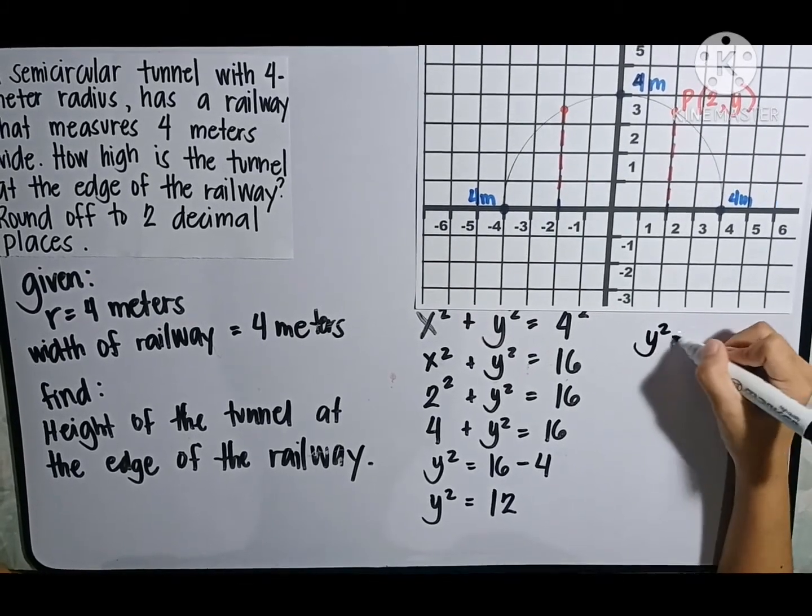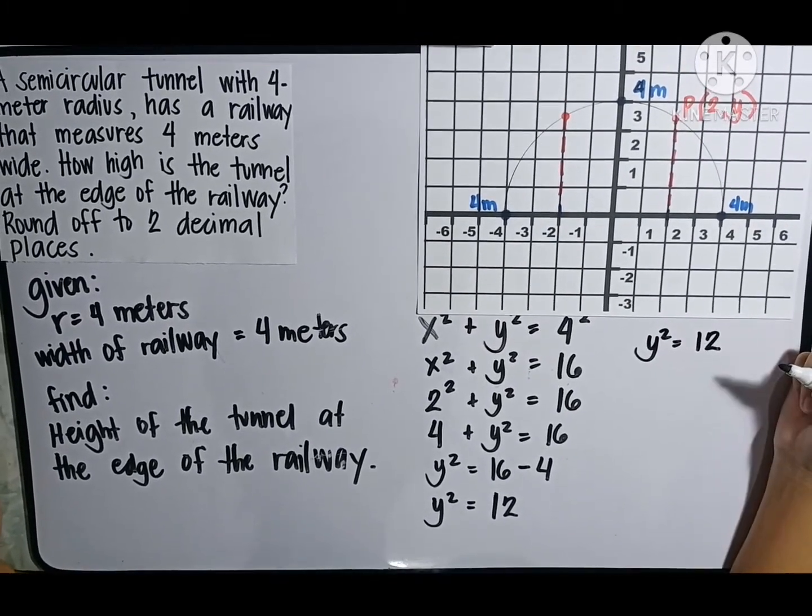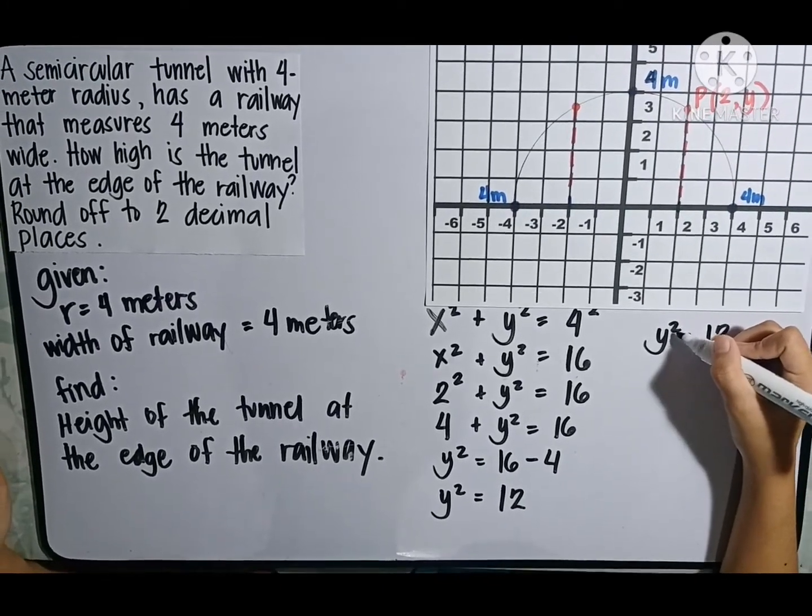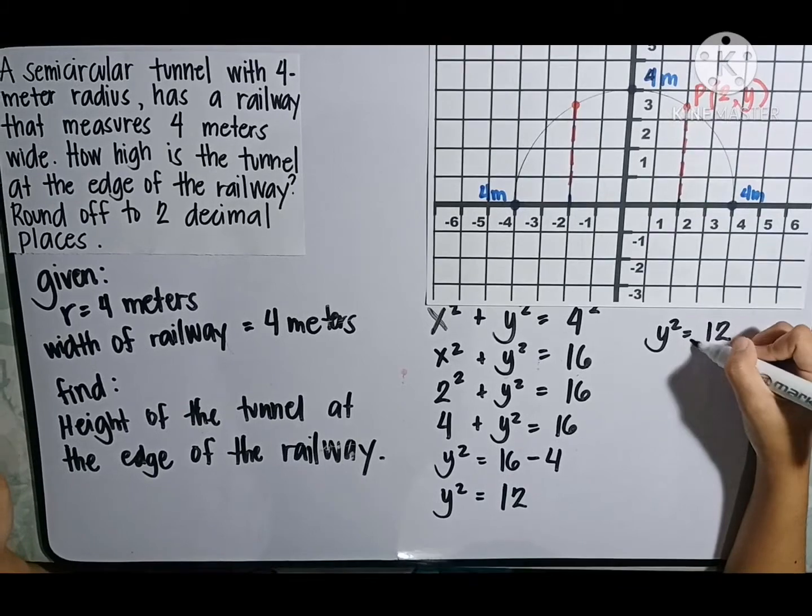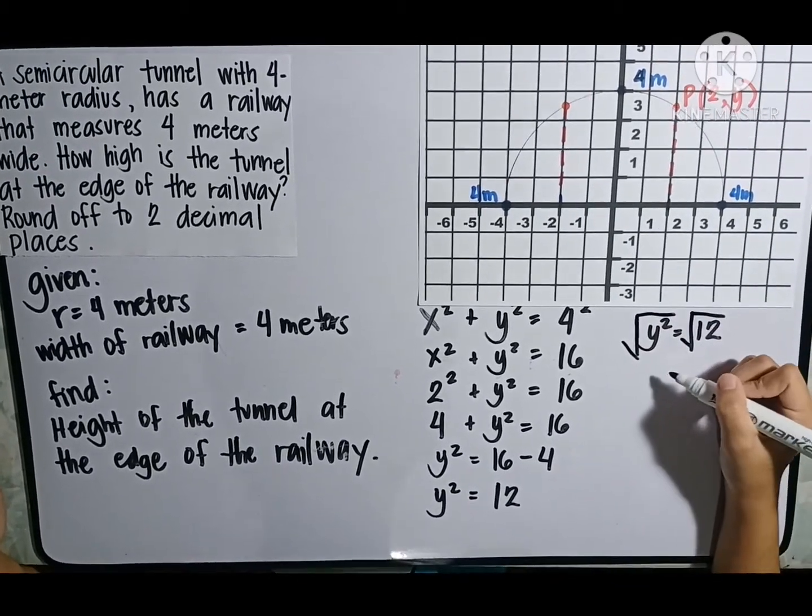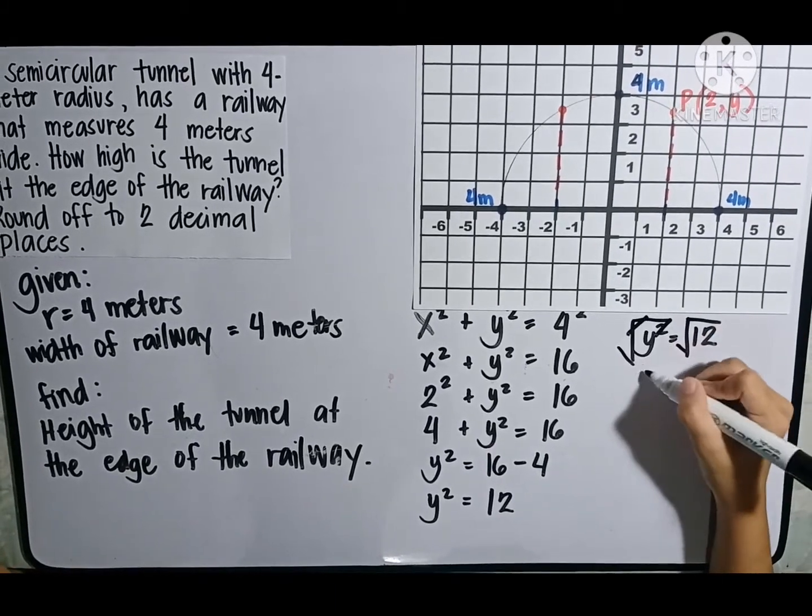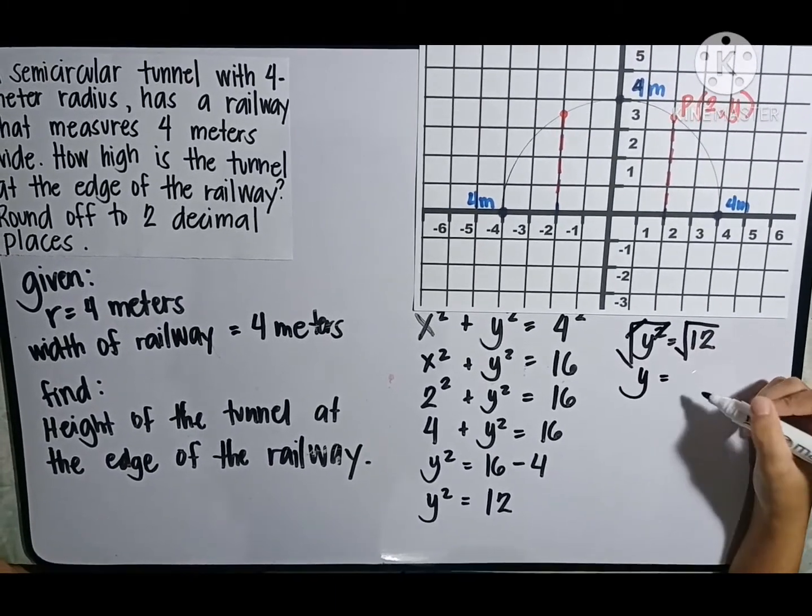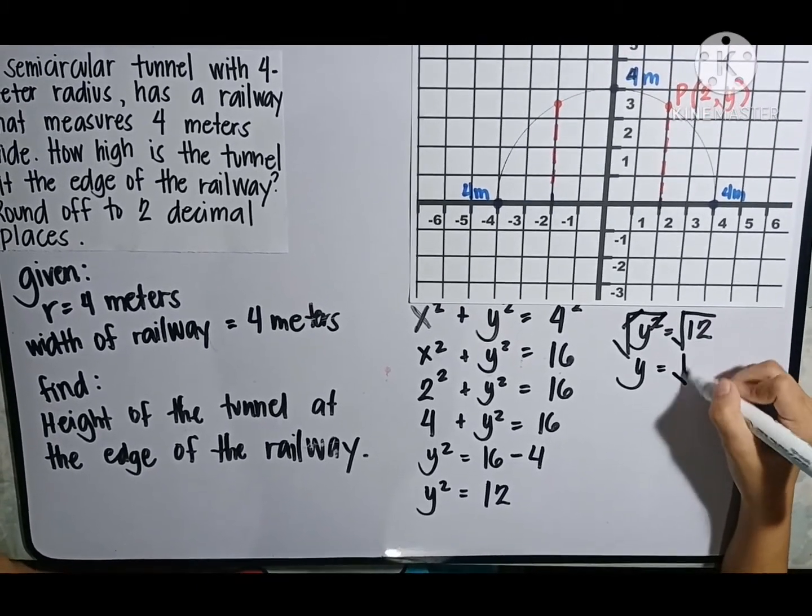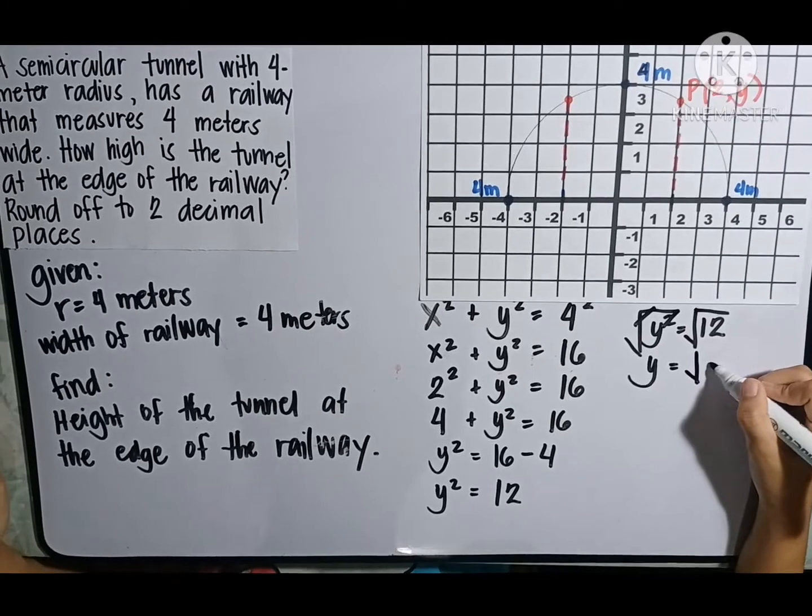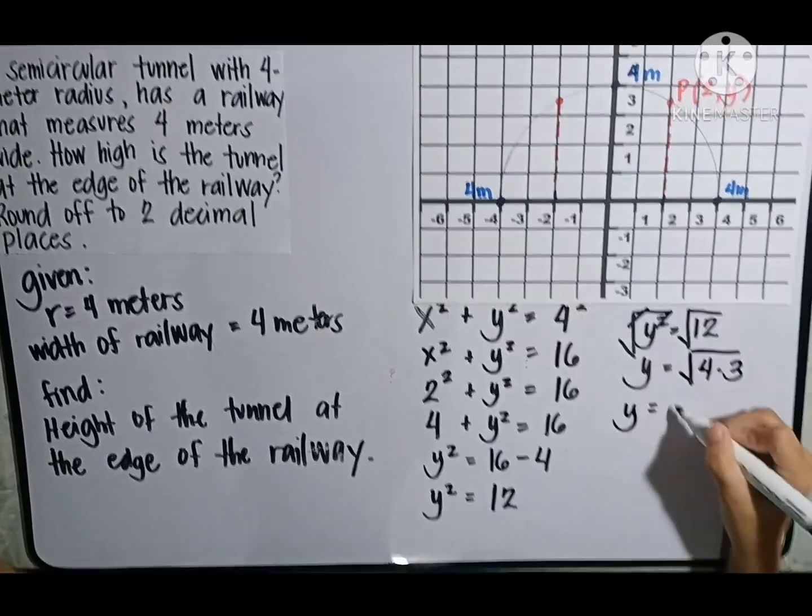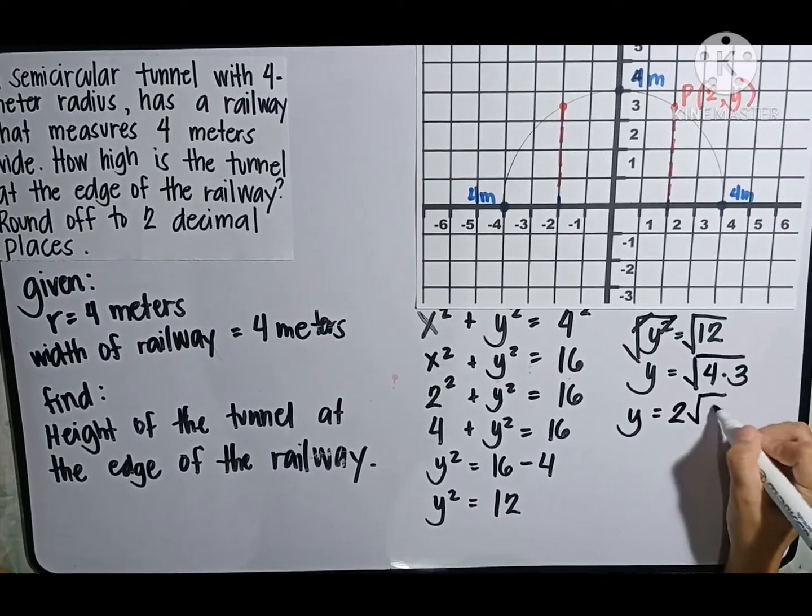Now, y squared is equal to 12 and we need to cancel the exponent. What we need to do is to square both sides. The square root of y squared is equal to y while the square root of 12 is equal to the square root of 4 times 3. So, it will be y is equal to 2 times the square root of 3.